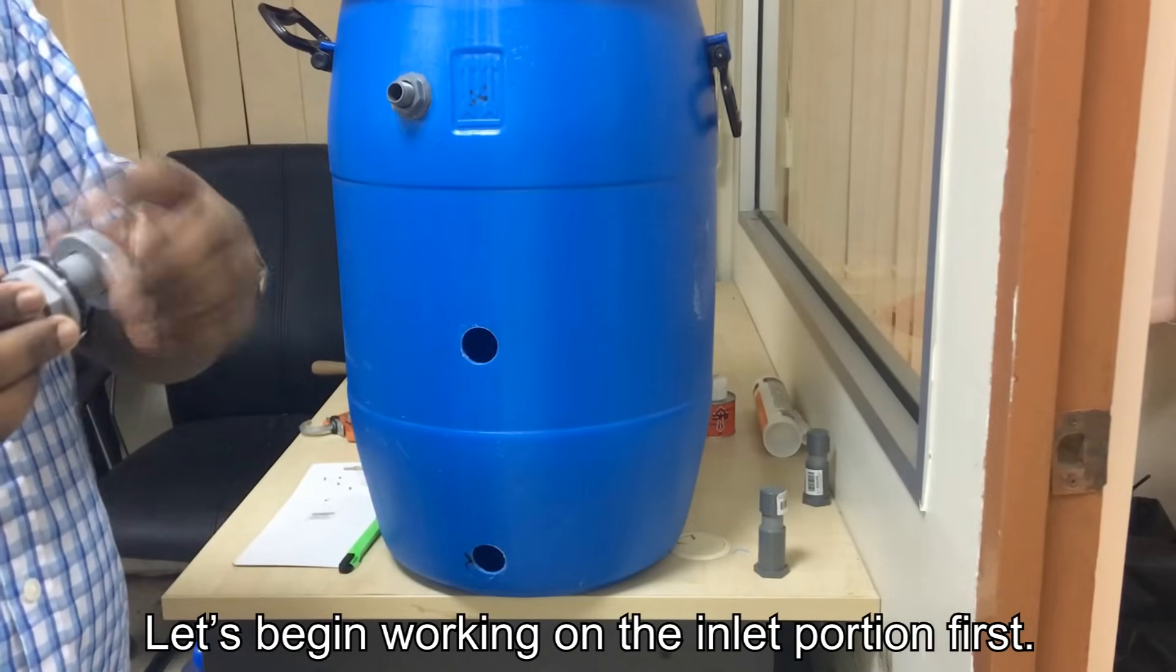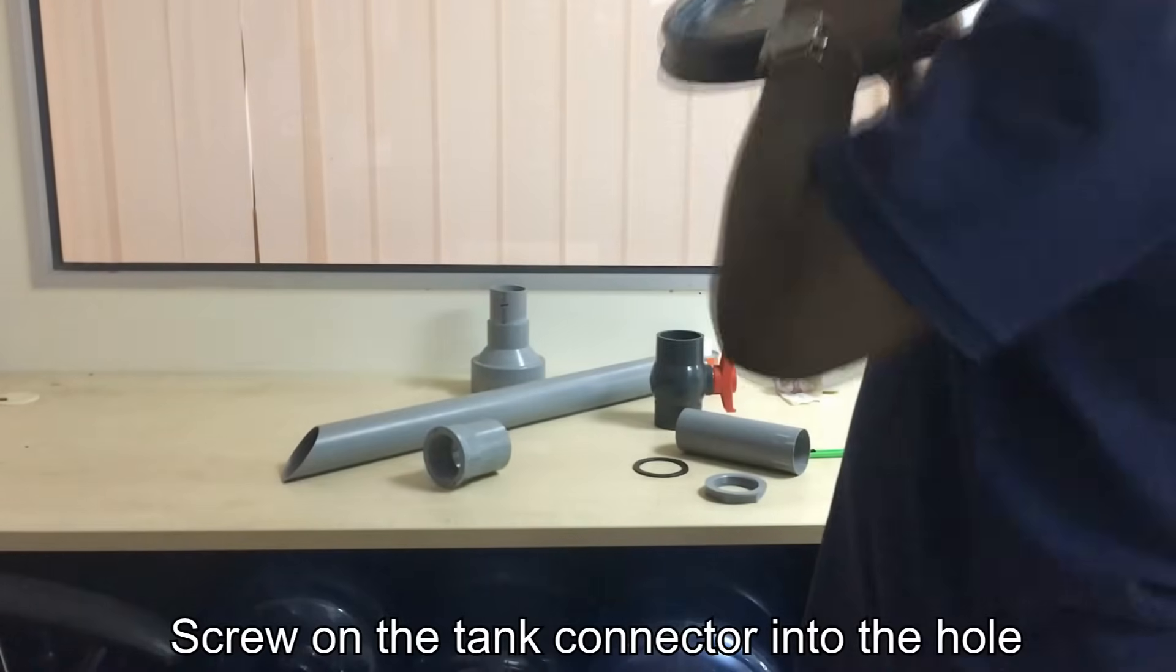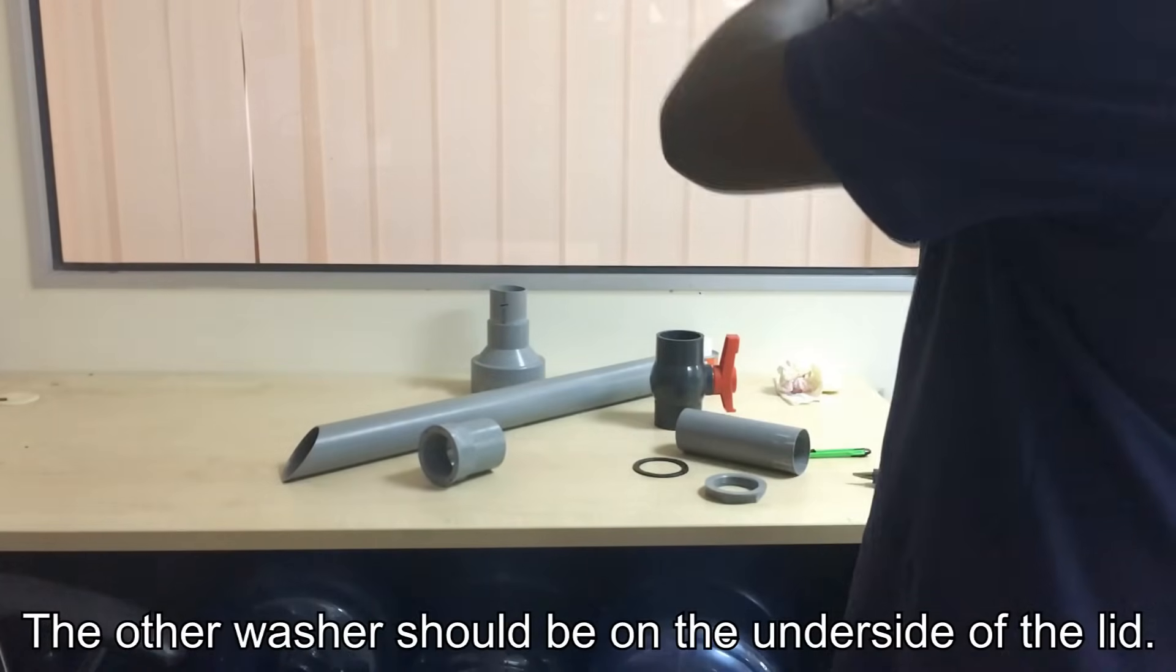Let's begin working on the inlet portion first. Remove only one washer and the plastic nut. Screw on the tank connector into the hole. The other washer should be on the underside of the lid.